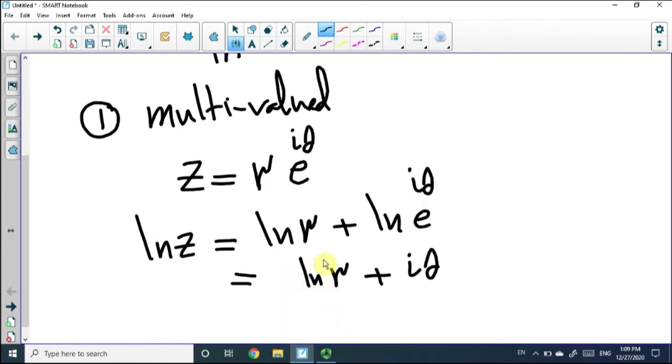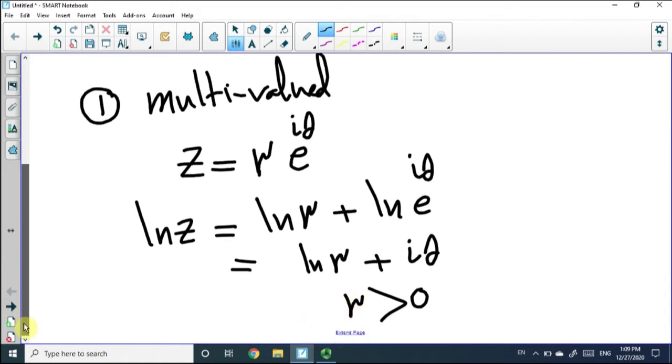Now, we know that r is real. ln r is defined for values greater than zero. We know that r should be more than zero, which means the logarithmic function is not defined for z equals zero, which is the origin. So r has to be greater than zero. Let's go back to our problem, multi-valued function.